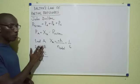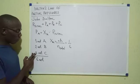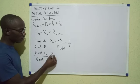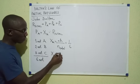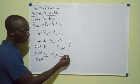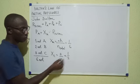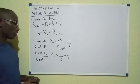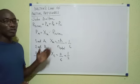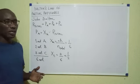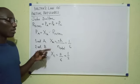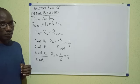So that's the mole fraction of A. Then for the mole fraction of C, I'll say mole fraction of C equals 3 over 6, which of course is 1 over 2. So mole fractions are calculated as the number of moles of that component divided by the total number of moles.